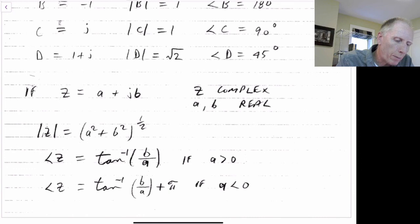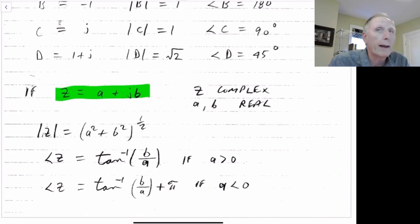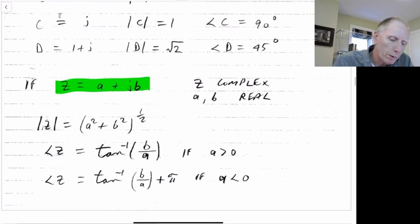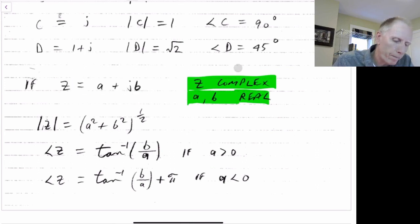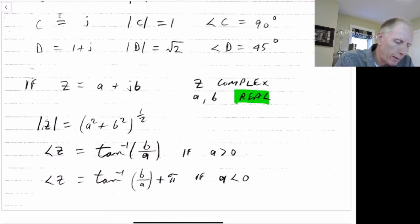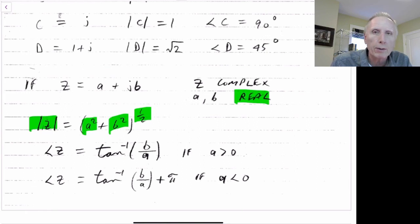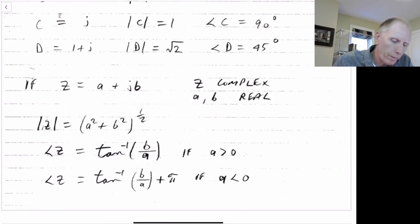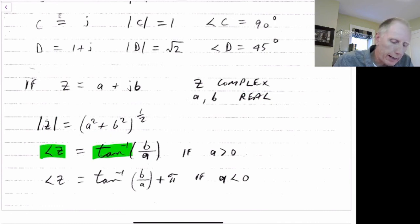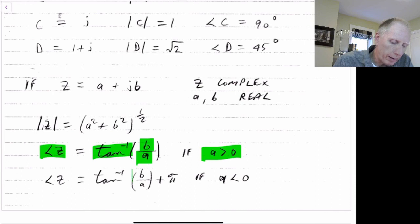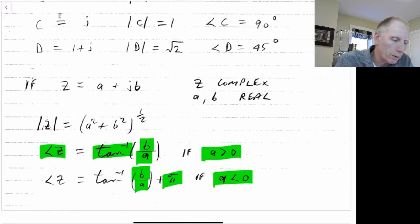So we can write a complex number as z equals a plus jb, where a and b are both real numbers. The magnitude of z is just given by the square root of a squared plus b squared — Pythagoras' theorem. The phase of z equals the arctan of b over a if a is greater than zero, and arctan of b over a plus pi if a is less than zero.